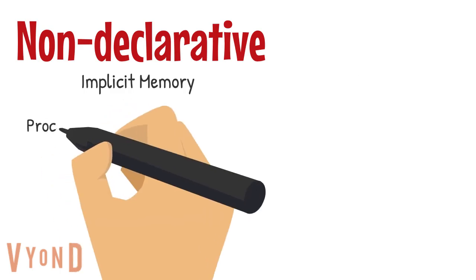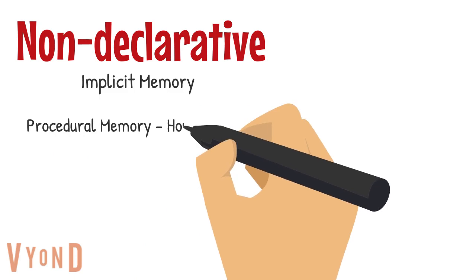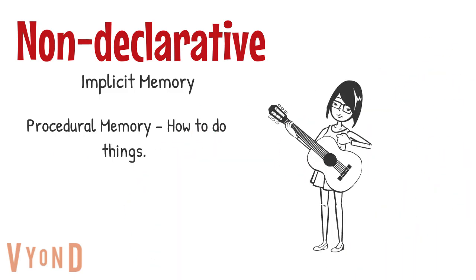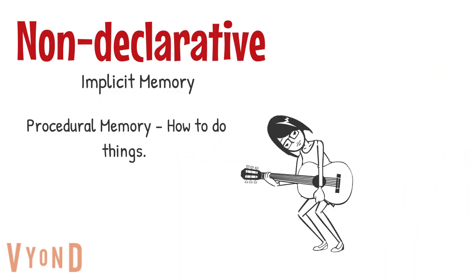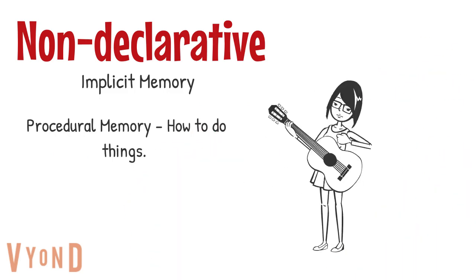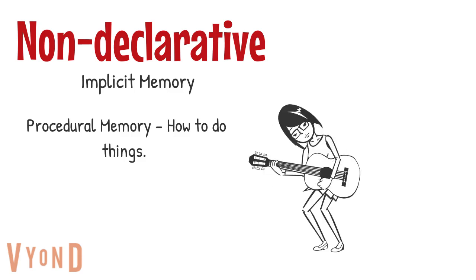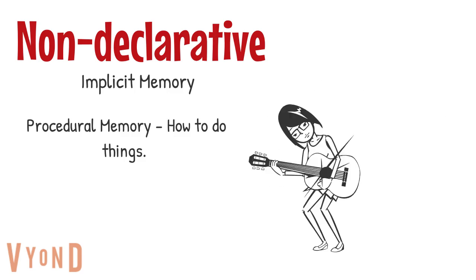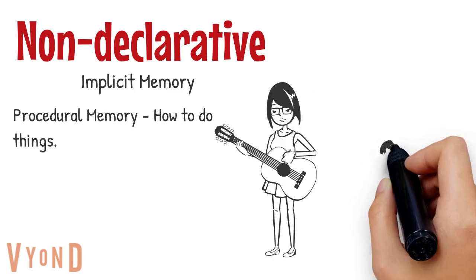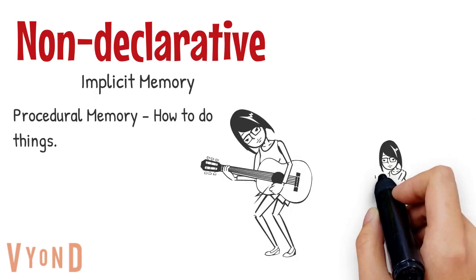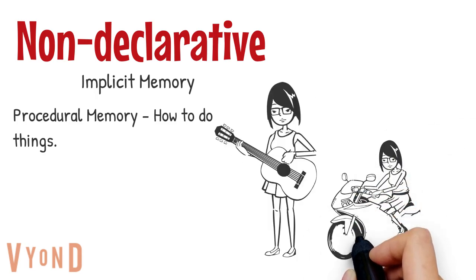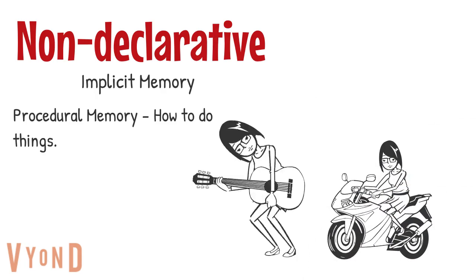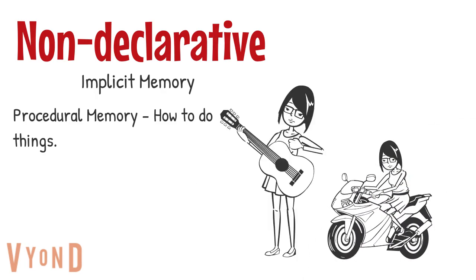Another form of non-declarative or implicit memory is procedural memory. Procedural memory is memory on how to do things — for example, playing a guitar or riding a motorcycle. Procedural memories are things that you do.